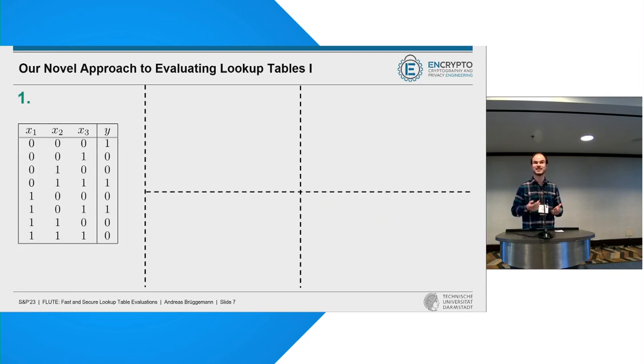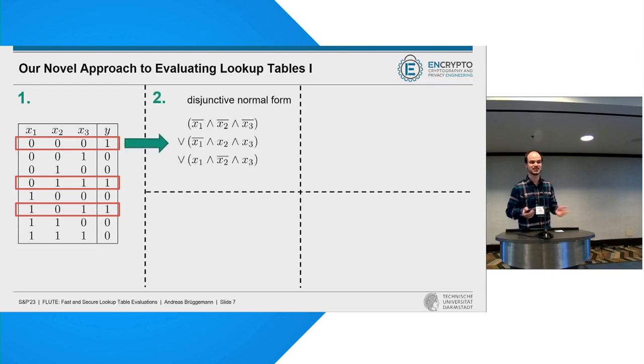So how does this actually work? Our approach works as follows. If we look at some lookup table that we want to evaluate, we first have a look at all rows of this lookup table where it actually evaluates to one. Now we build a Boolean formula out of this representing this lookup table. This is quite simple in this case. It's a disjunctive normal form where we just have multiple clauses. Each clause evaluates to one exactly if the input assignment is given of one of the rows where the output is one.